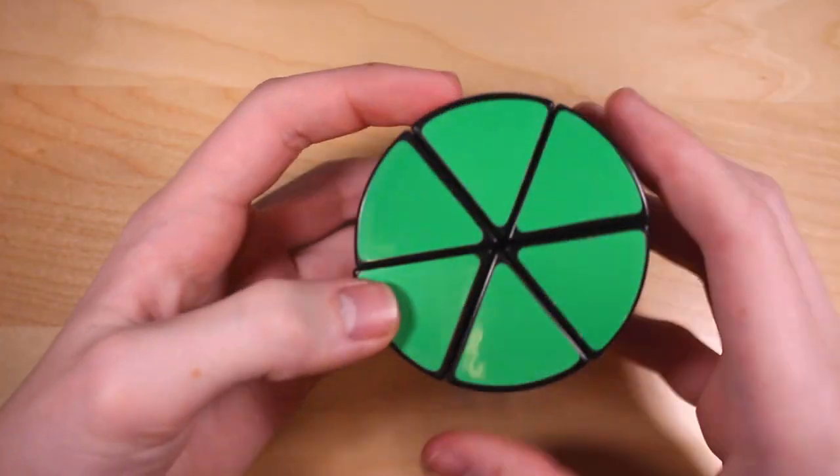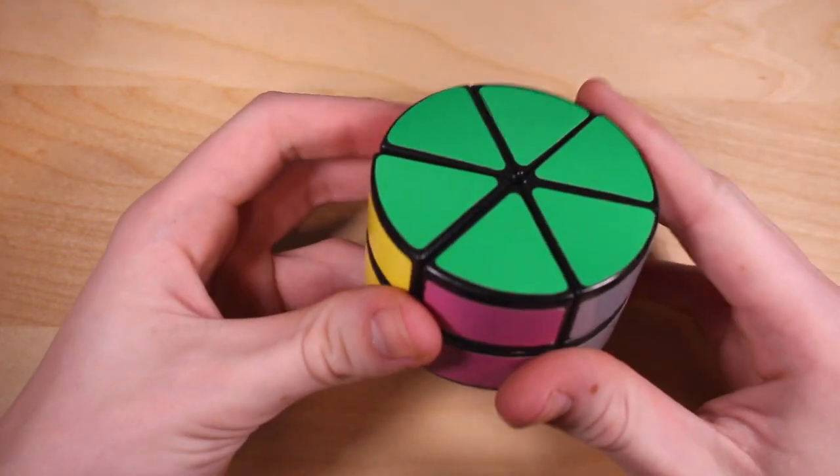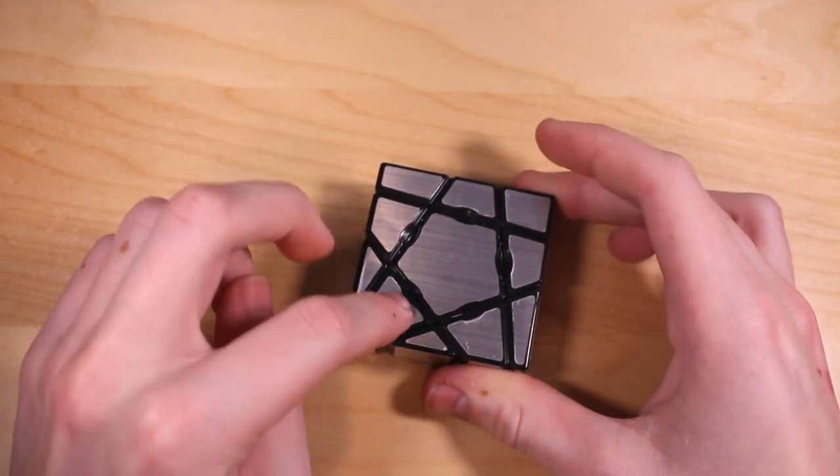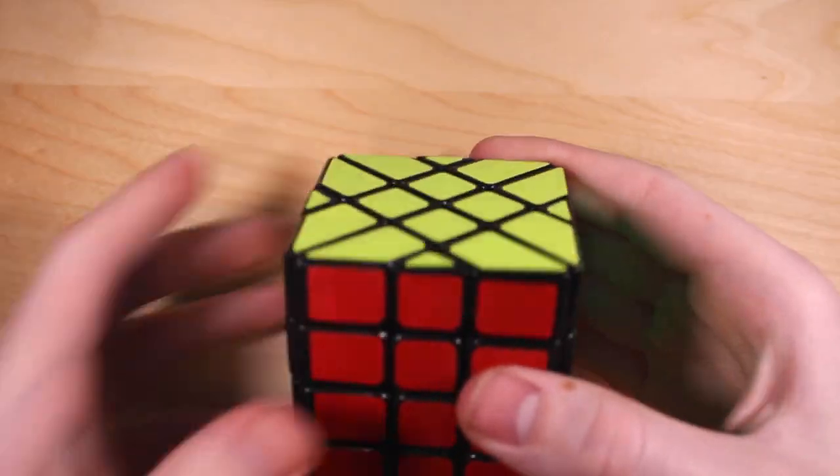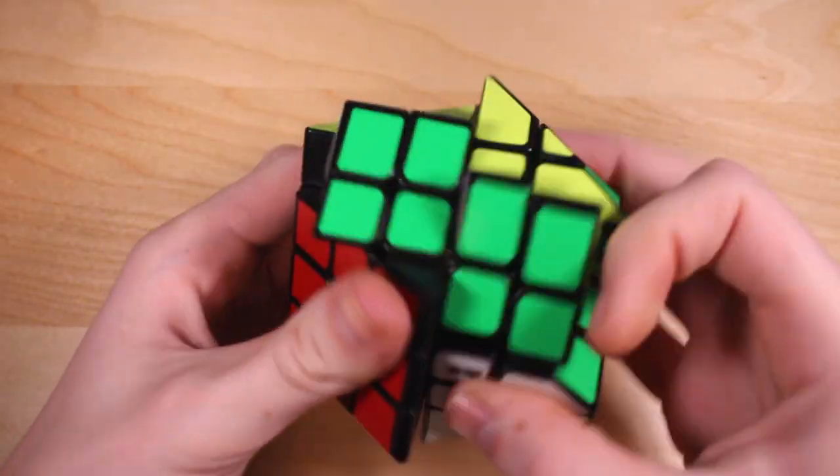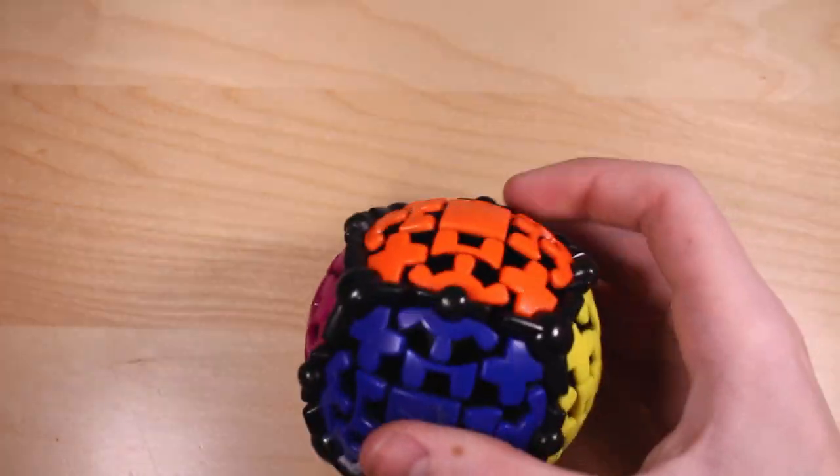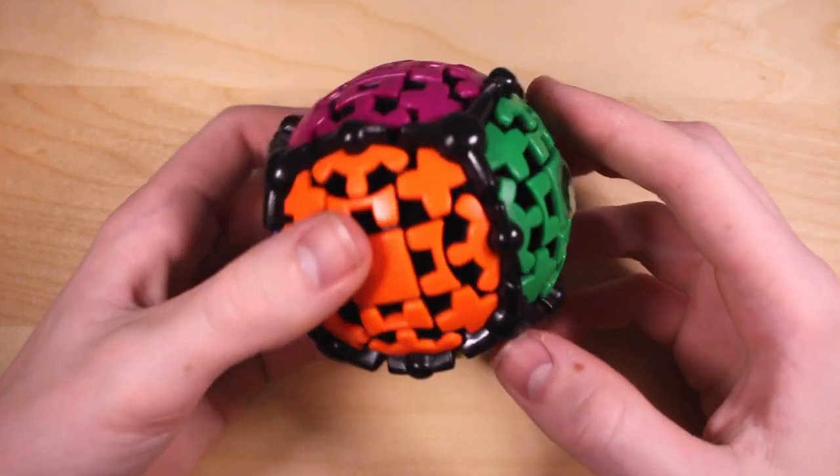Unknown Brand 3x3x2. Turns okay and proved to actually be very challenging to solve. YJ Floppy Ghost Cube. Although it should be Floppy Ghost Megaminx because there's five centers. This is actually kind of hard to solve. MoYu Fisher 4x4. I really like this puzzle. There's a lot of interesting things that come up while solving it. Meffert's Gear Ball. Turns okay. It looks really complicated, but it's actually really easy.